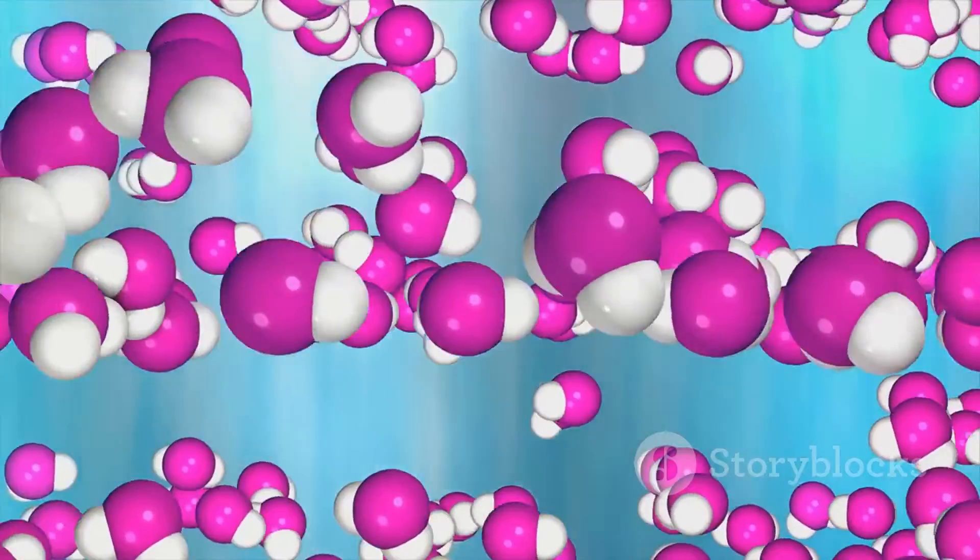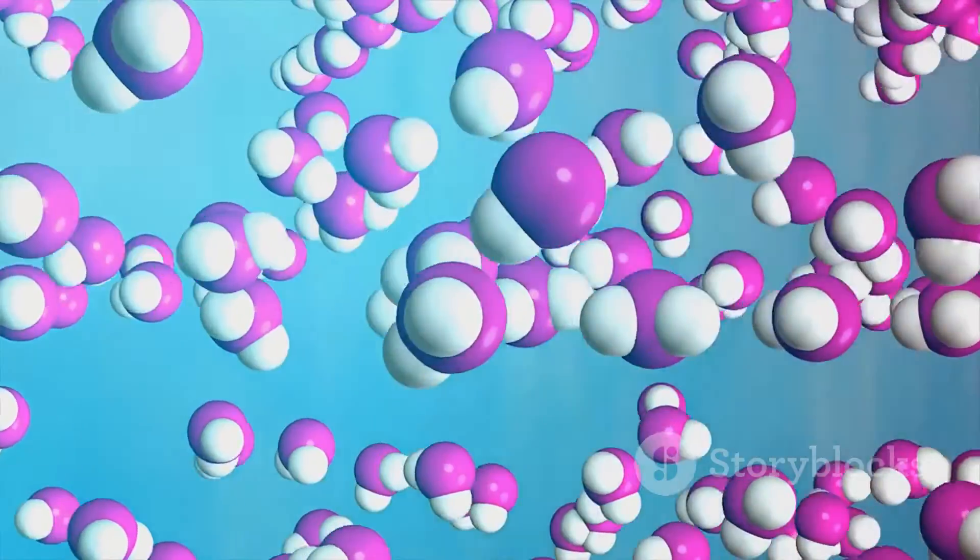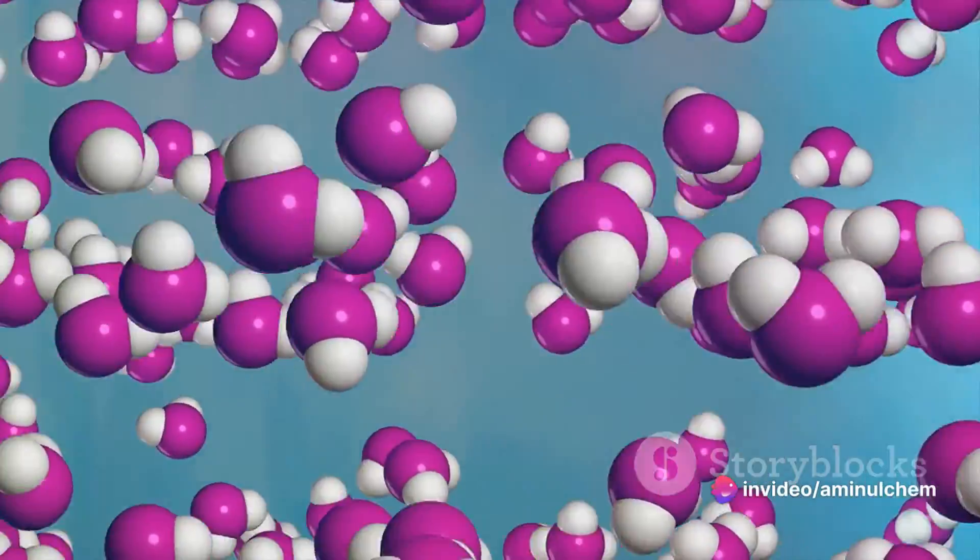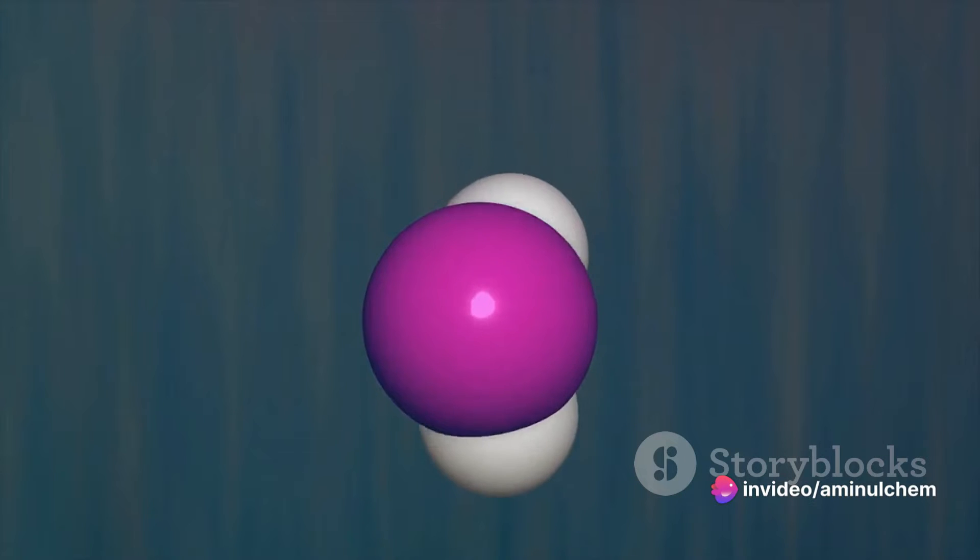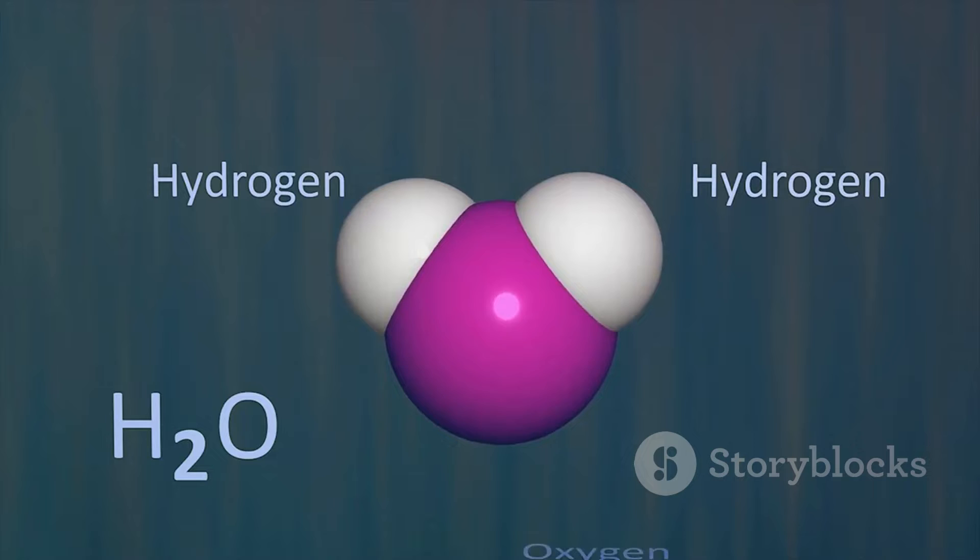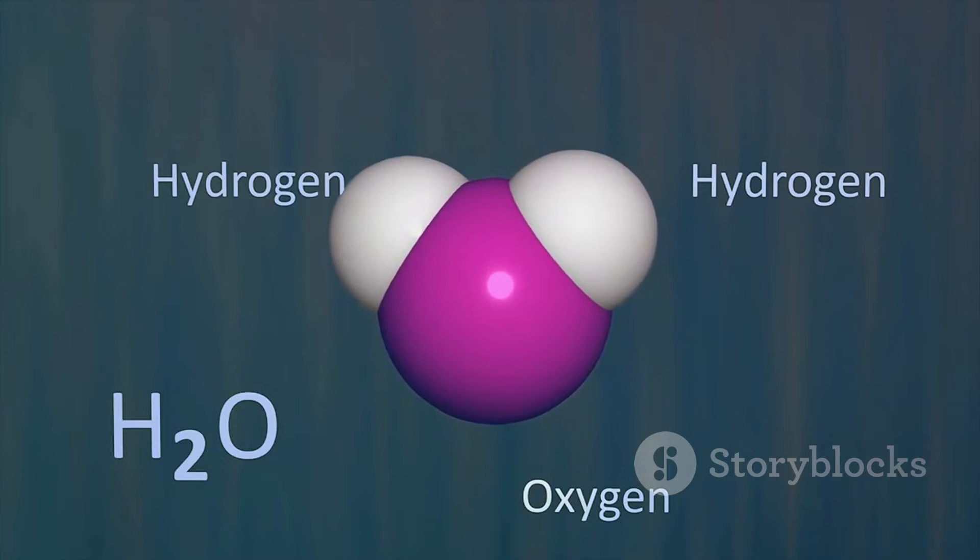Lastly, let's talk about equilibrium. In the Langmuir model, the rate of adsorption—that's molecules binding to the surface—and desorption—molecules leaving the surface—are perfectly balanced at equilibrium. It's a delicate dance where for every molecule that leaves, another one comes to take its place.